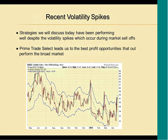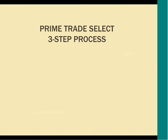I took a snapshot today of the VIX volatility index, which measures investors' fear. Usually when the VIX increases in price, the S&P 500 index is declining — it's kind of an inverse indicator. You can see recently we've had three spikes of the VIX index, indicating the S&P 500 was declining. The strategies we'll discuss today have been performing well despite these volatility spikes during recent market sell-offs. Prime Trade Select has been performing well during this type of market condition, leading us to the best profit opportunities, vastly outperforming the broad market.